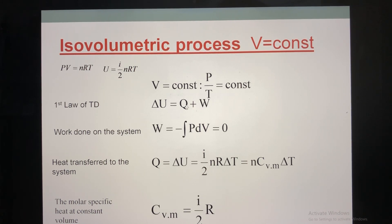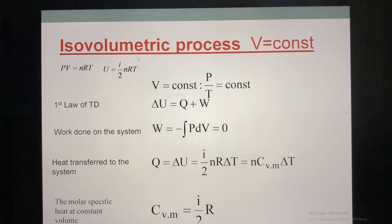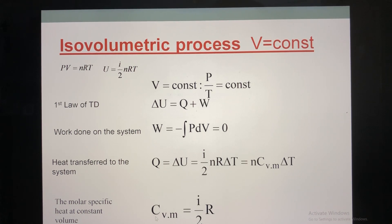Because the work is zero, therefore the heat equals the change of internal energy and equals this formula. To shorten, I denote I over 2 times R as CV, which we call the molar specific heat at constant volume. So conclusion for this slide: the isovolumetric process means volume is constant, the equation is P over T equals a constant, the change of internal energy is calculated with delta T, the work is zero, and therefore the heat equals the change of internal energy. The molar specific heat CV is calculated based on the degree of freedom and the gas constant.